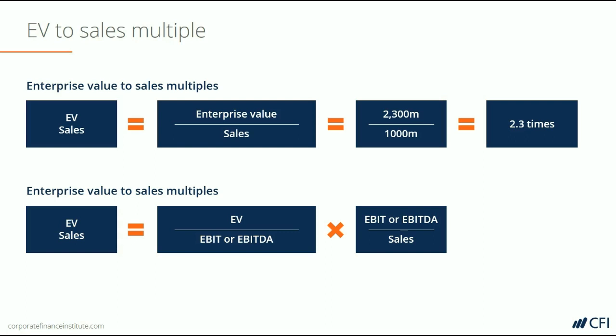If we wanted to break it down into more components, we could look at the EV to EBITDA ratio and then multiply that by the EBITDA margin. This company has an EV of $2.3 billion, EBITDA of $650 million, and therefore an EV to EBITDA ratio of 3.5 times. The EBITDA margin is 65%, so if we multiply 3.5 by 65% we arrive at an EV to Sales multiple of 2.3 times — the same as the first method.